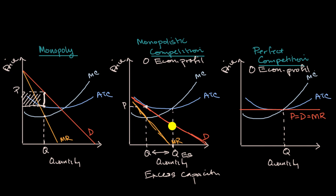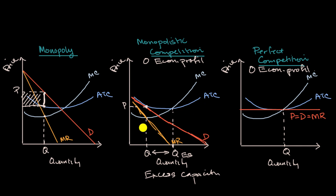One thing that might be counterintuitive: in previous videos, we talked about how as people enter and exit a market, it shifts the supply curve — but here we're shifting the demand curve. When people enter and exit the market, it shifts the supply curve for the entire market, but not the demand curve for the entire market. What we've drawn here is not the market demand curve — it's the demand curve for this particular firm's product. So as there are more entrants in the entire market, the demand for this particular firm's products goes down.